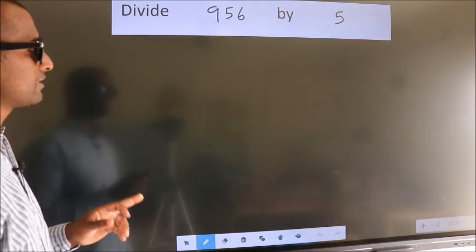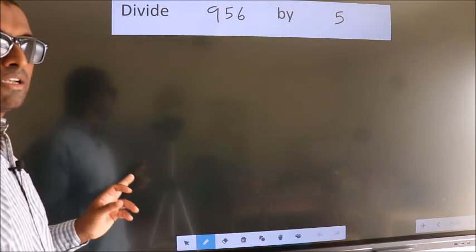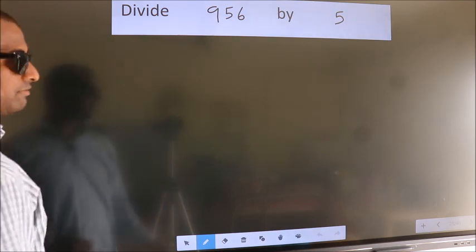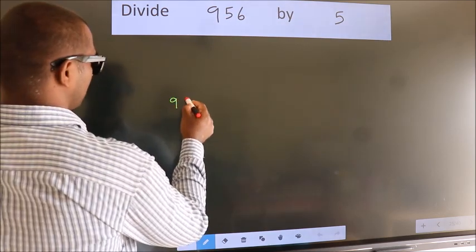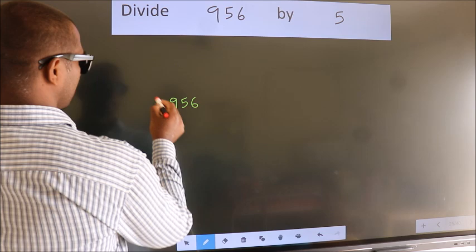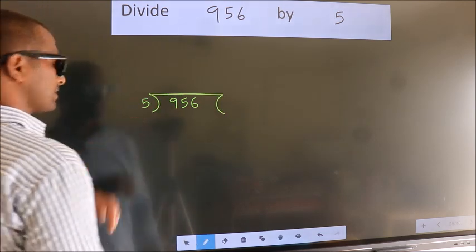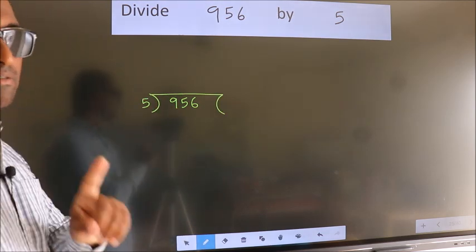Divide 956 by 5. To do this division, we should frame it this way. 956 here, 5 here. This is your step 1.